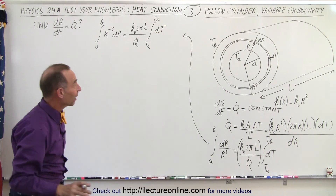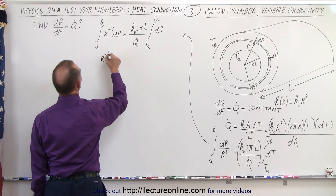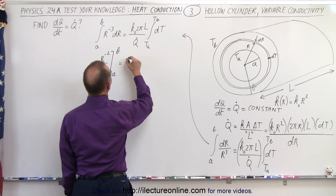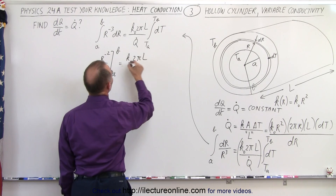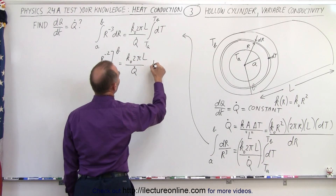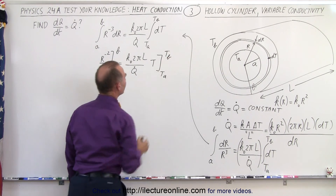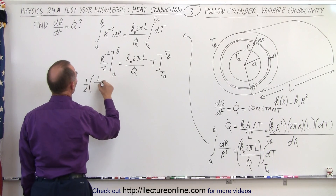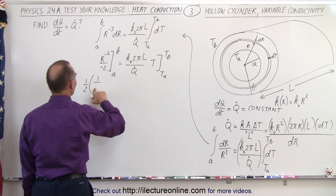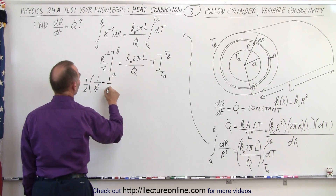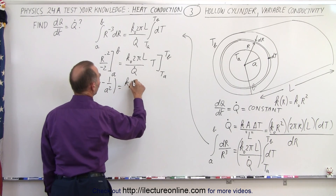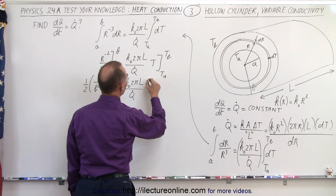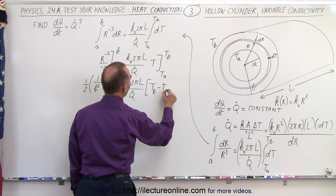Now we're ready to integrate both sides. On the left side, this becomes r to the negative-2 divided by negative-2, evaluated from A to B. On the right side we get K-naught times 2πL over Q-dot, times T evaluated from Ta to Tb. Plugging in the limits, we have negative one-half times (1 over B-squared minus 1 over A-squared), equals K-naught times 2πL over Q-dot, times (Tb minus Ta).